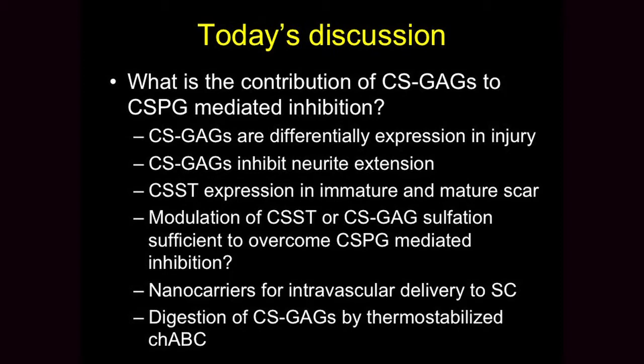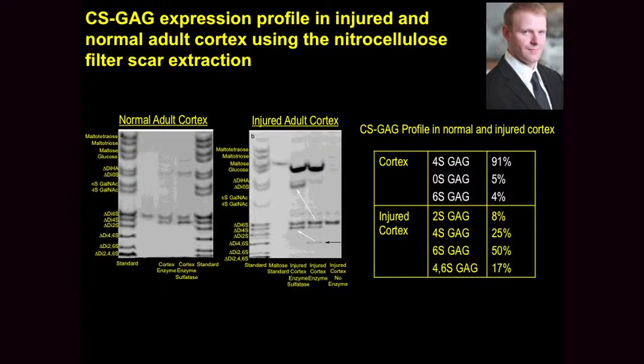I'll also round things off by looking at some data on thermally stabilizing the enzyme chondroitinase ABC. This is work from Ryan Gilbert when he was in my lab — he's now a professor at RPI in New York. What we're showing here is a gel that runs the different GAGs, just the sugars. If you look at the uninjured cortex versus the injured cortex in the CNS — and we've since done this in the spinal cord and the data holds — the profile of the sugars in terms of sulfation groups changes.